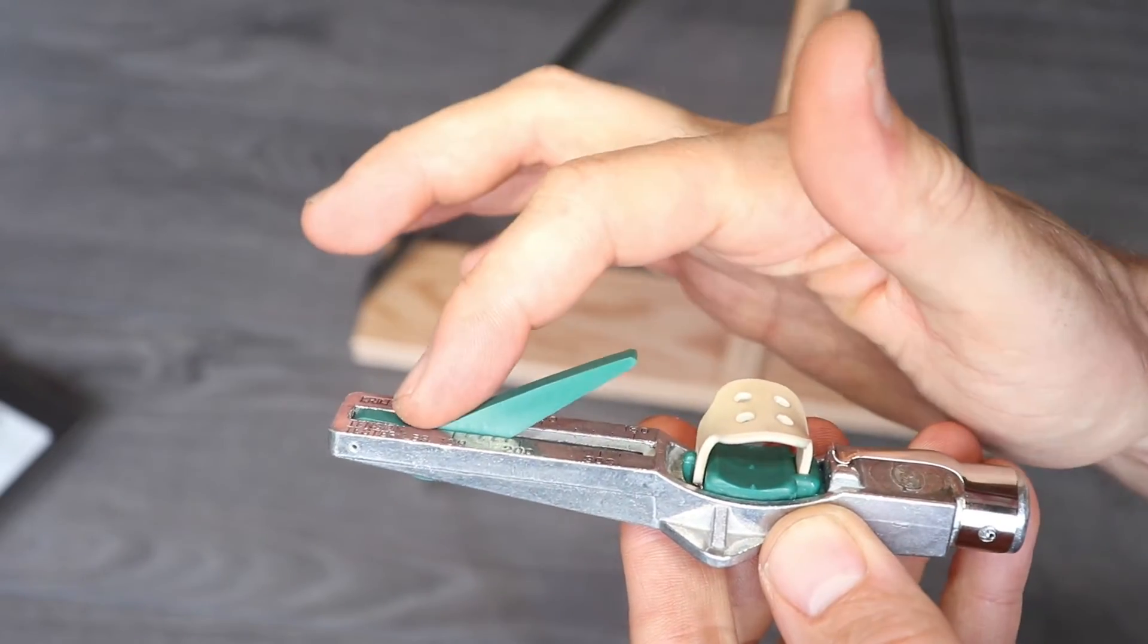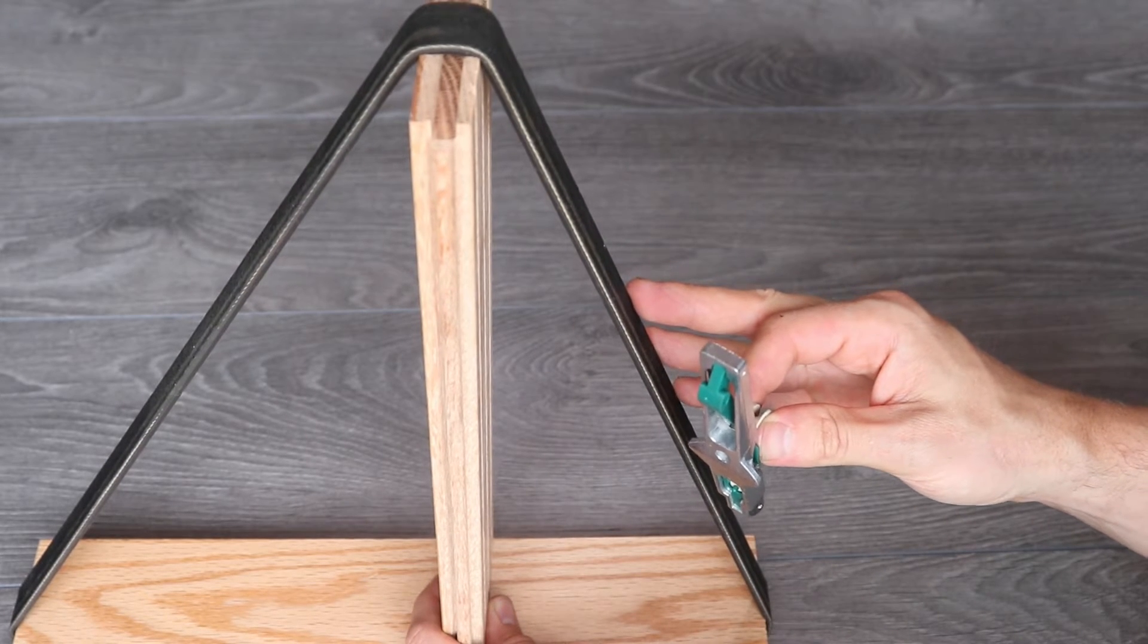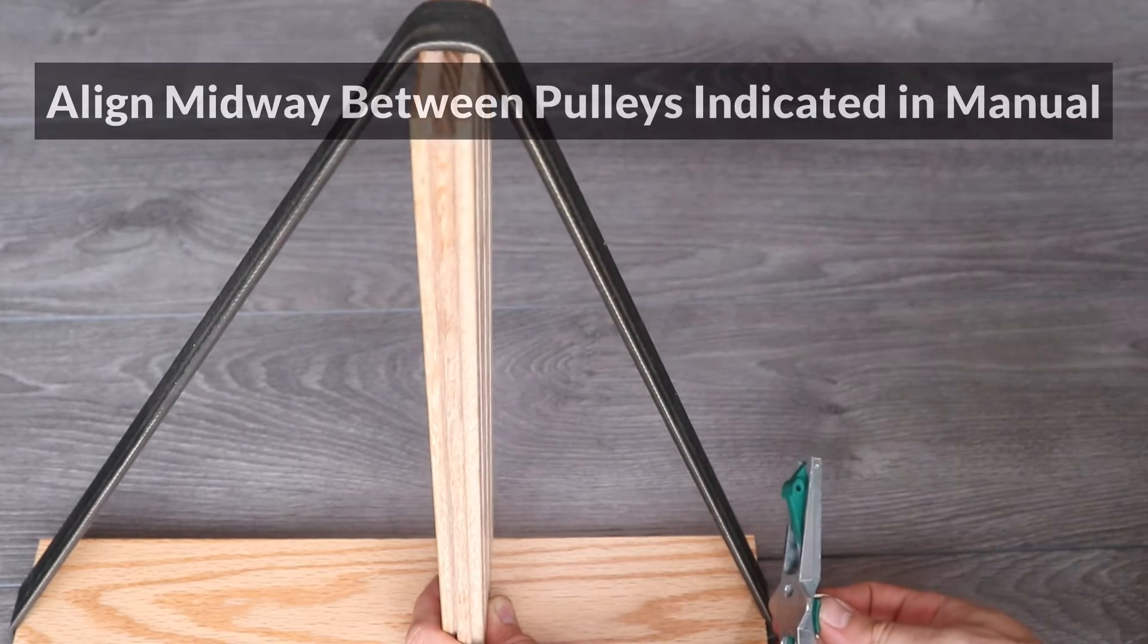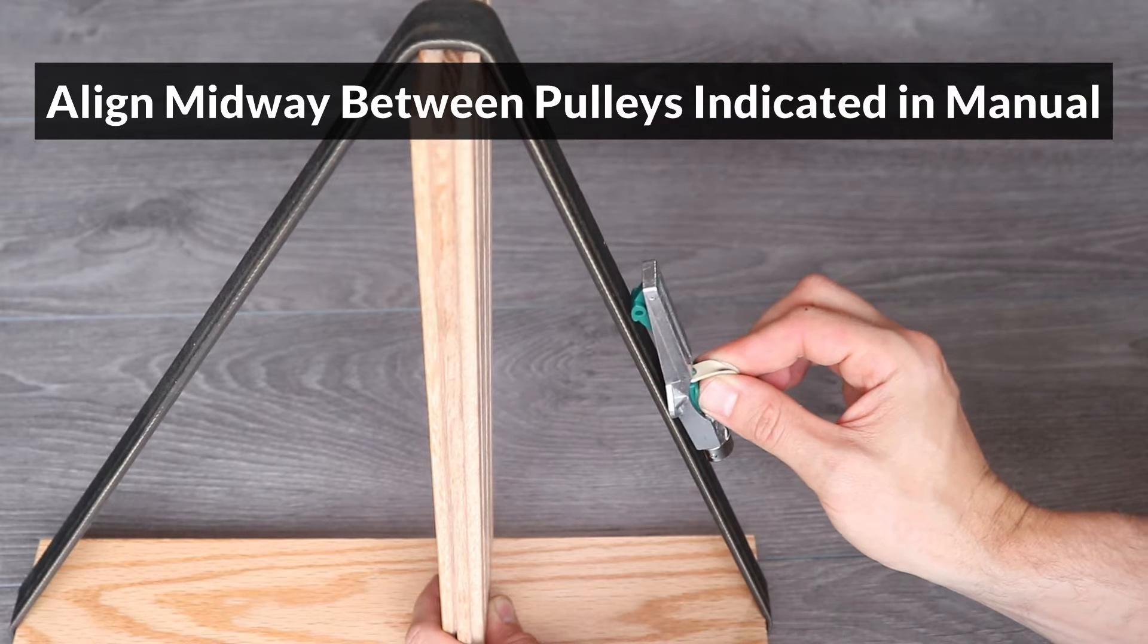Before taking the measurement, make sure that the needle is all the way down. So I'm just going to use this model as an example, because it's hard to show on the car. I'm assuming that there's a pulley at the top here and a pulley at the bottom, and you would align the tester right in between the two pulleys in the center, which would be right here.